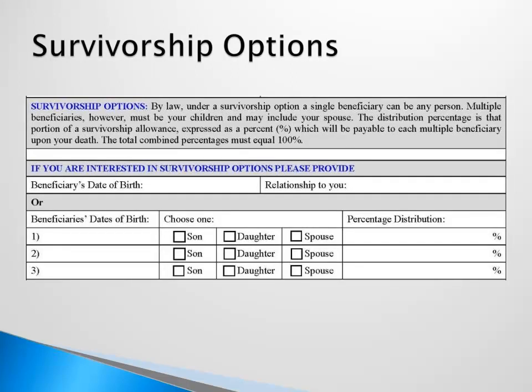A member may select a reduced pension under a survivorship option to provide a lifetime pension to a beneficiary or beneficiaries. The amount of the reduction in the member's retirement pension will depend on the option selected, the member's age at the time of retirement, and the age of each primary beneficiary.